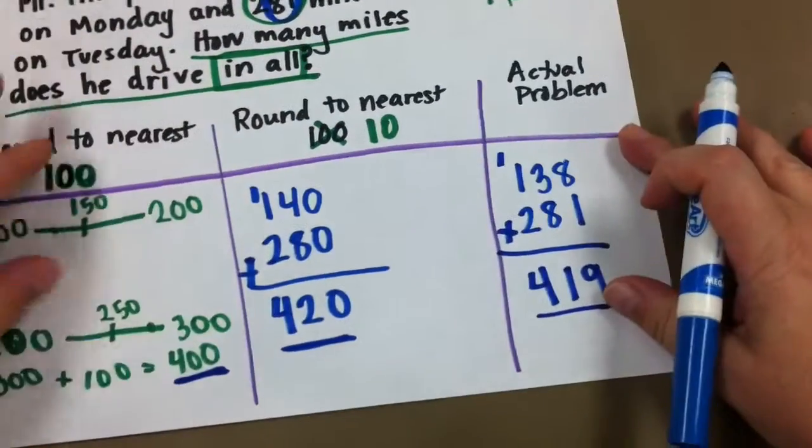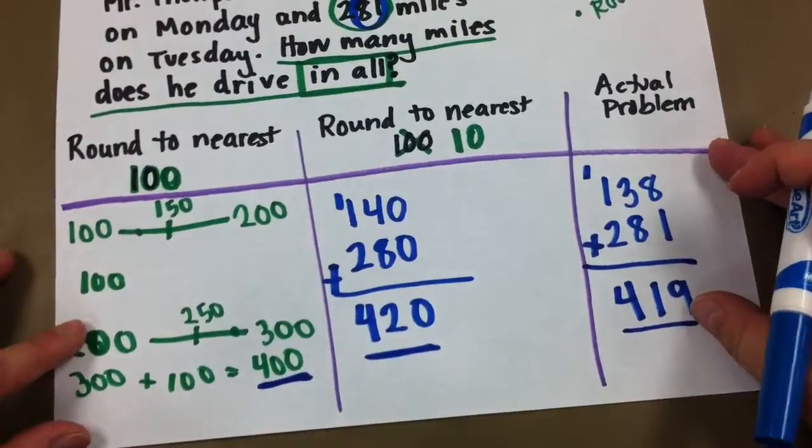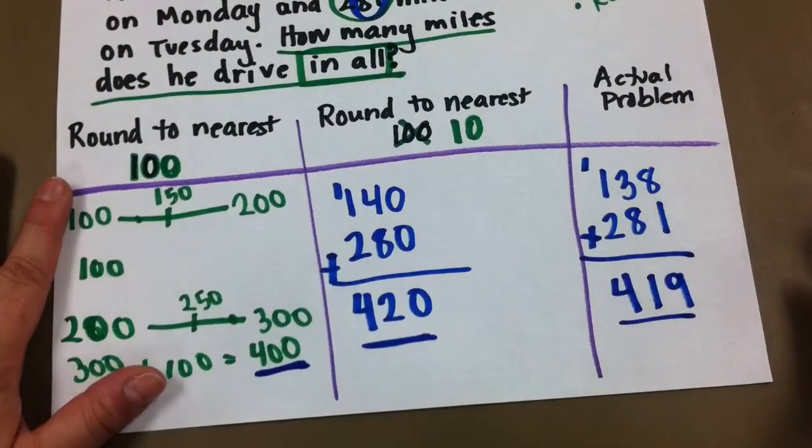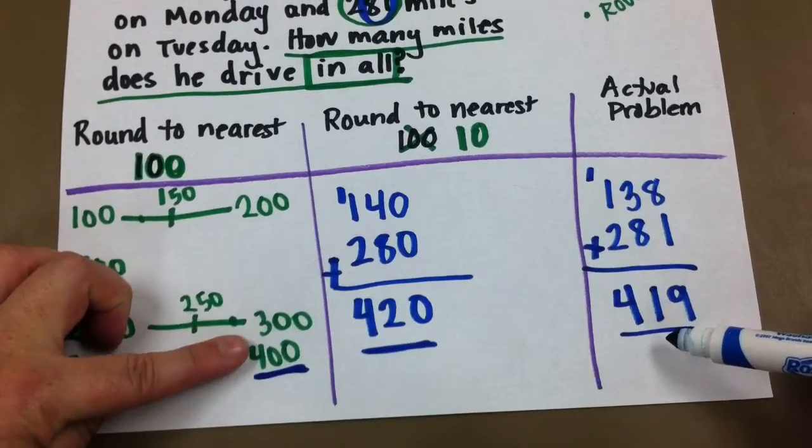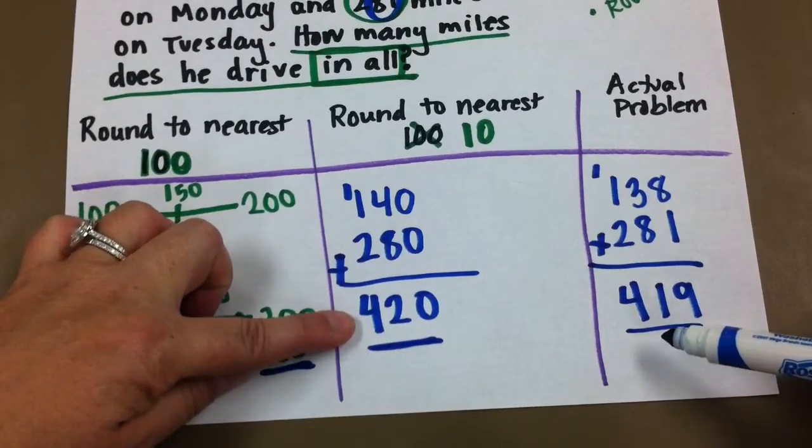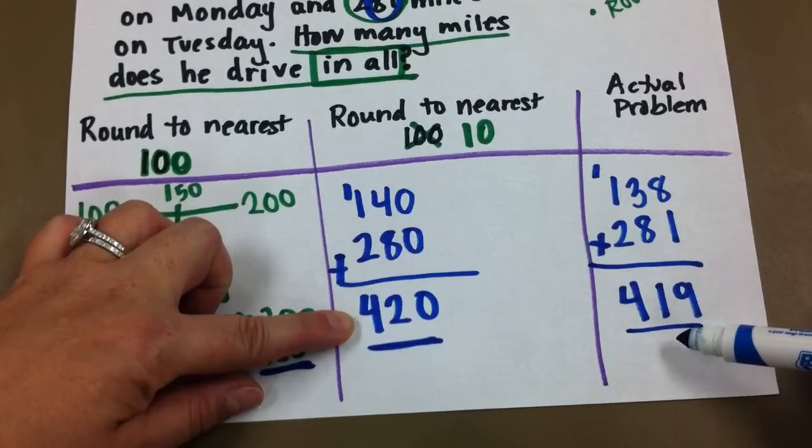Okay, so which one is closer? Which one is more precise? When we round to the nearest 100s, when we round to the nearest 10s, is that closer? That's right. When we round to the nearest 10s, it gets us closer to our actual answer.